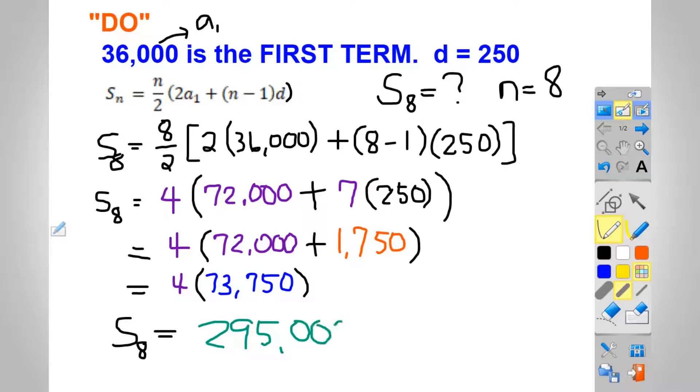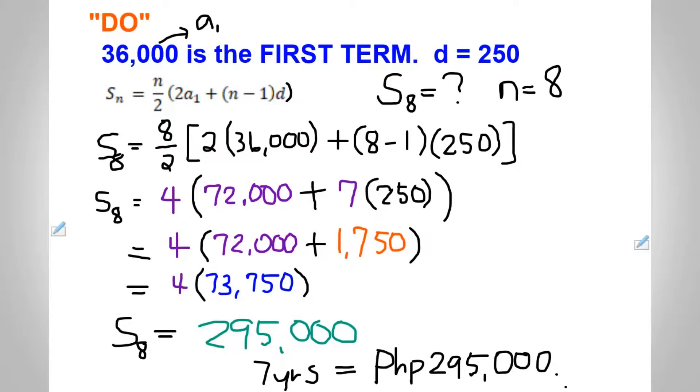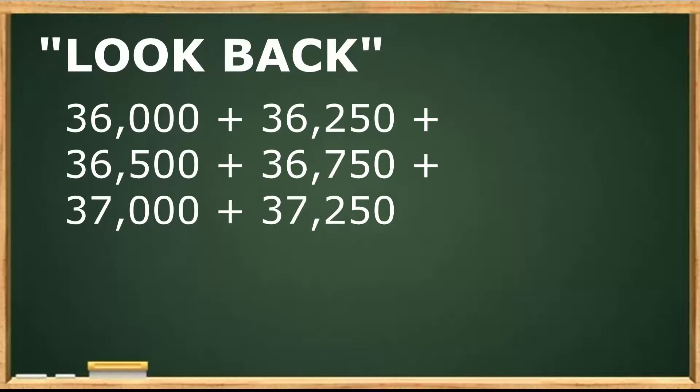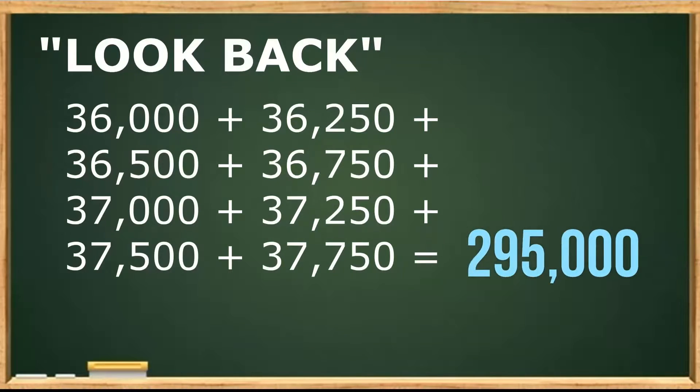To interpret this means that for 8 years, the house helper will have a total of 295,000. To check the correctness of the answer, we simply add all the terms of this given arithmetic sequence. With that, we can see that the answer will be 295,000. Very easy, right?